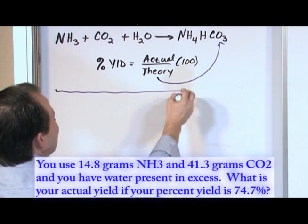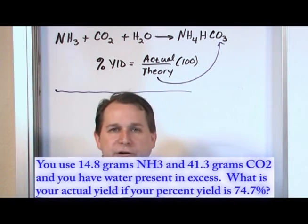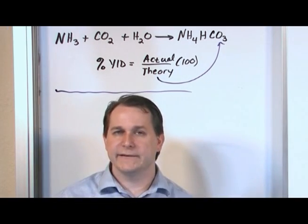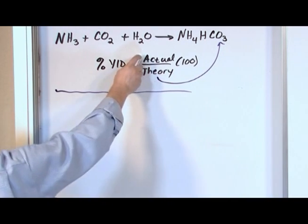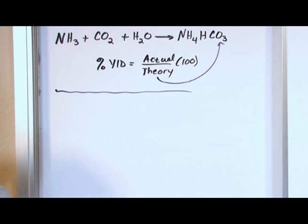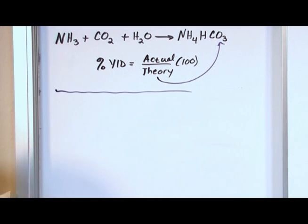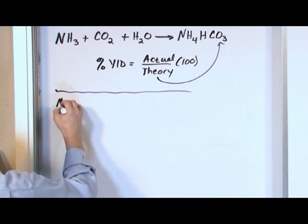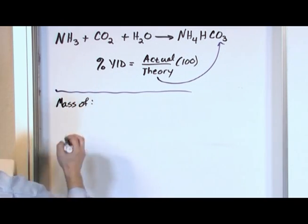It's a sort of cloaked problem. All you have to do is calculate the theoretical yield — which is what we've been doing with limiting reactants — and then use it to calculate the actual yield given the percent yield. So the first thing we should do, because we're given grams everywhere, is find the molar masses of everything relevant in this reaction.